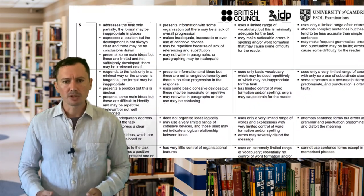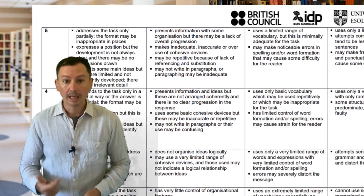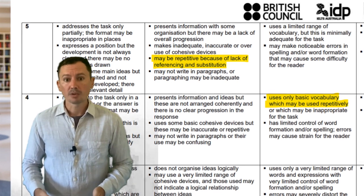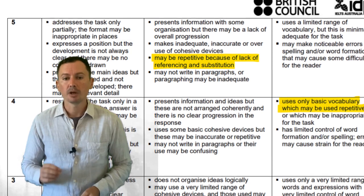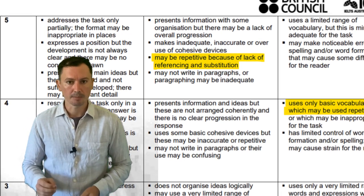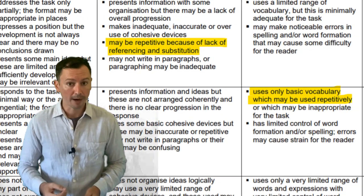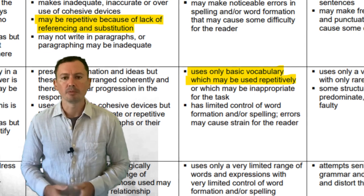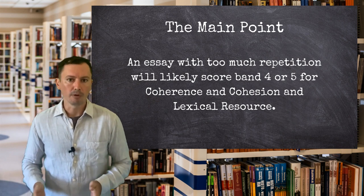In the IELTS band descriptors, repetition is mentioned under both coherence and cohesion and lexical resource. For coherence and cohesion, it notes that band five essays may be repetitive because of a lack of referencing and substitution. For lexical resource, it says that a band four essay might feature basic vocabulary which may be used repetitively. In other words, if your essay is filled with the same words over and over, you might be stuck at around band four or five.